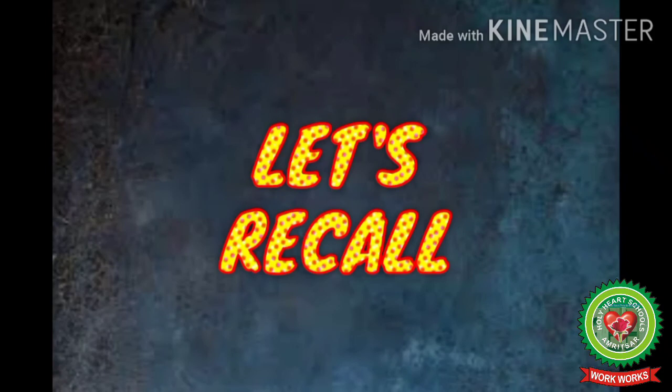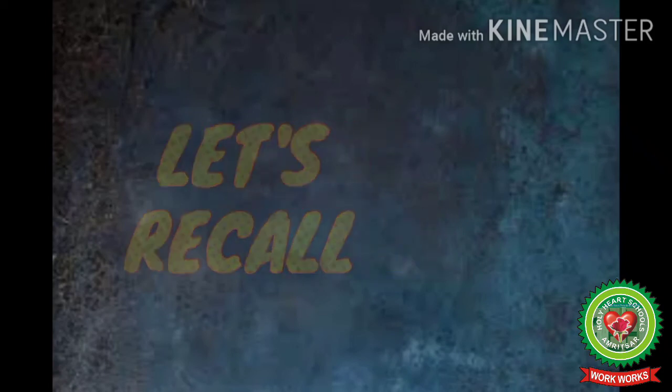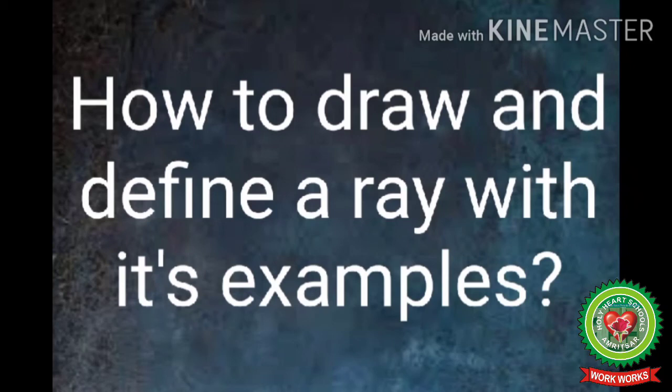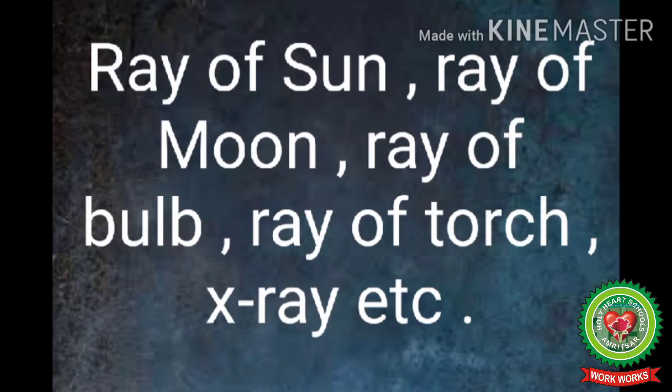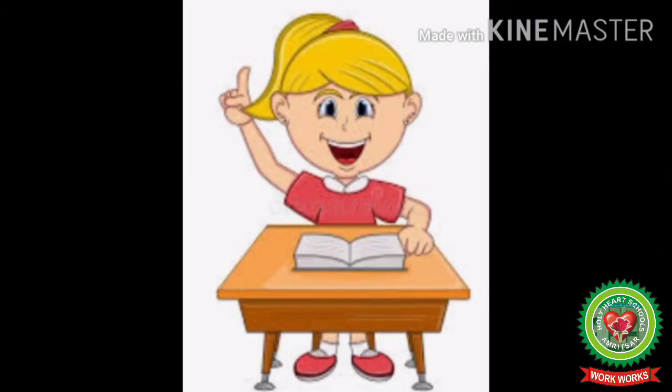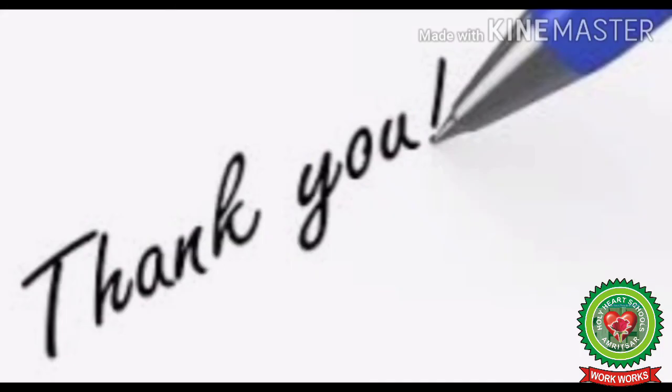Now let us recall what we have learnt today. Today we have learnt how to draw and define a ray with its examples. A ray has starting point but no ending point. Ray of sun, ray of moon, ray of bulb, ray of torch, x-ray etc. are its examples. Now children, I hope you all understood how to draw and define a ray with its examples. So open your snap homework and do your work. Thank you.